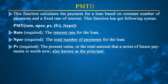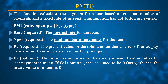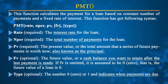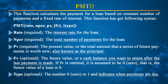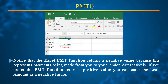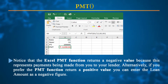The optional arguments are FV, the future value — the cash balance you want to attain after the last payment is made — and type, a number which is either 0 or 1 indicating when the payments are due. The actual formula is: =PMT(rate, NPER, PV) where FV and type are optional values.